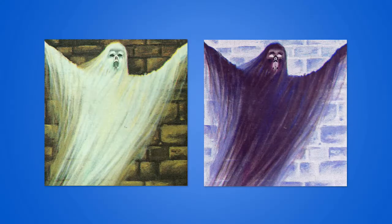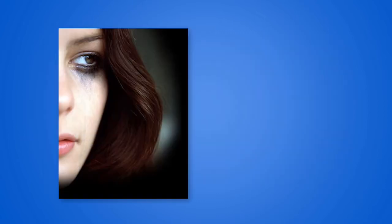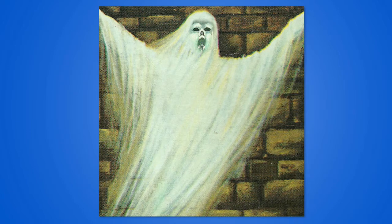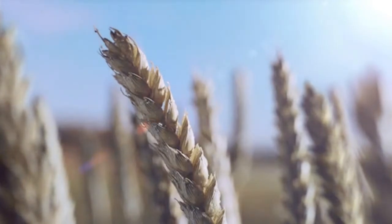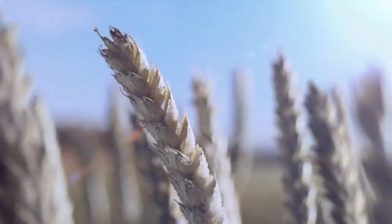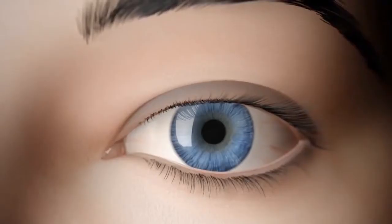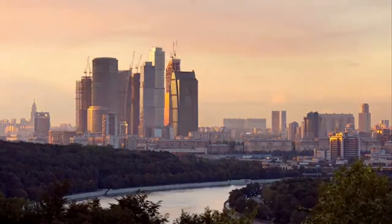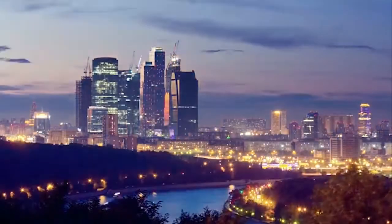There are two kinds of ghost images or afterimages: positive afterimages and negative afterimages. In positive afterimages, the colors of the original image are maintained. In short, the ghost image looks the same as the original image. You can see a positive afterimage by staring at a very brightly lit scene for some time and then closing your eyes. You will continue to see the original image with the same colors and brightness.